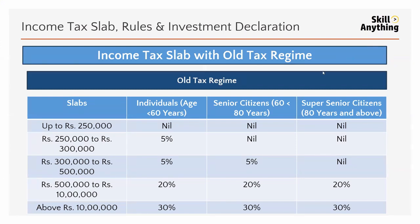This is the old tax regime income tax slab. Up to 2,50,000 it is nil. From 2,50,000 to 5 lakh it is 5 percent. From 5 lakh to 10 lakh it is 20 percent. And above 10 lakh it is 30 percent.